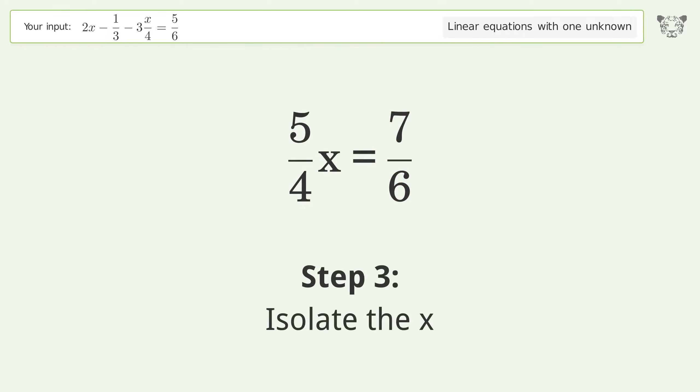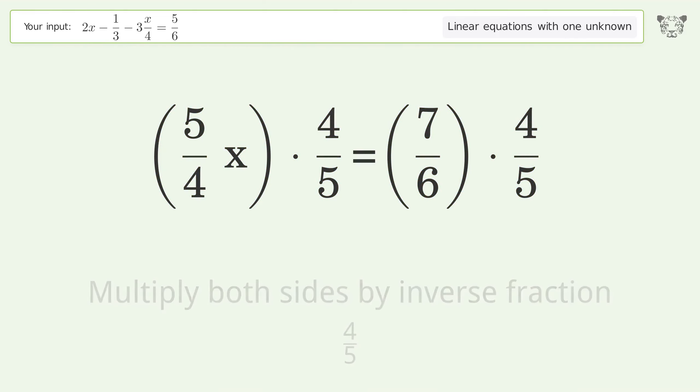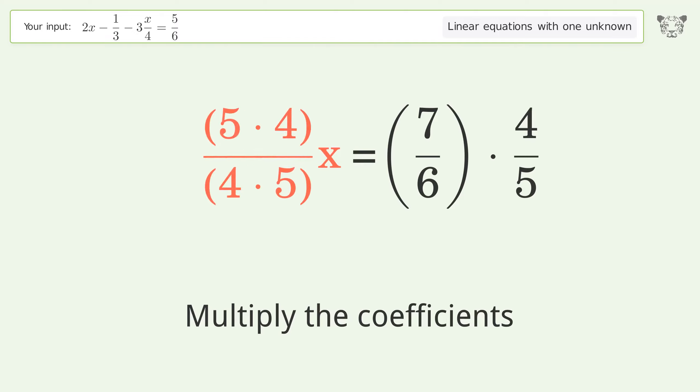Isolate the x. Multiply both sides by inverse fraction 4 over 5. Group like terms. Multiply the coefficients. Simplify the fraction.